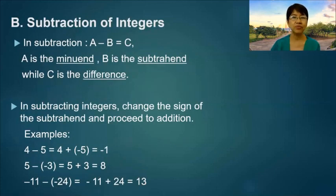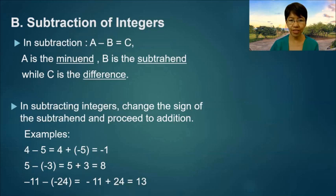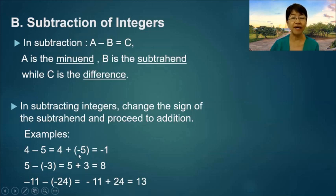Subtraction of integers. In subtraction, A minus B is equal to C. A is the minuend, B is the subtrahend, and C is the difference. In subtracting integers, change the sign of the subtrahend and proceed to addition. Example: 4 minus 5 is equal to 4 plus negative 5, which is equal to negative 1.